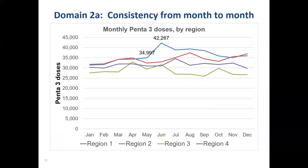This is an example of the type of chart which we can use to look at month-to-month consistency of data — in this case, the number of reported third doses of penta vaccine. Each of these lines represents the trend over the 12-month period in the penta-3 doses for one region. The blue line is region one, and it has this hump here which, unlike the data from the other regions, suggests a certain inconsistency from month to month — it has jumped up in a way that we don't quite see with the data from the other regions.